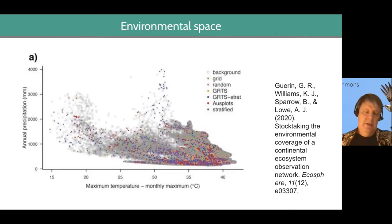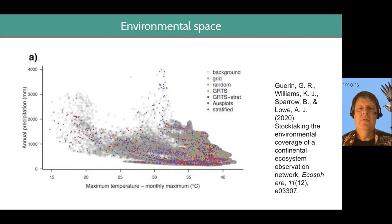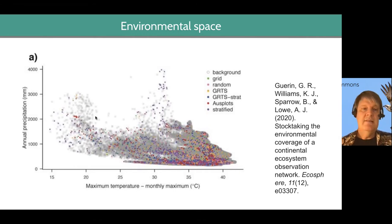You also need to consider environmental space when you're looking at your occurrence data. Maybe you want to use data from just the last two years to be as recent as possible. But when you go to plot the points — all these colorful dots are places where surveys have actually been done in environmental space — the gray dots are the environmental space of your entire study area.